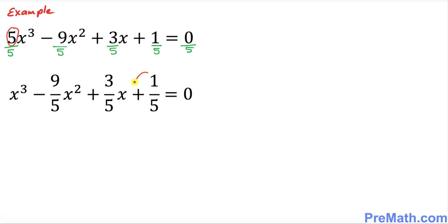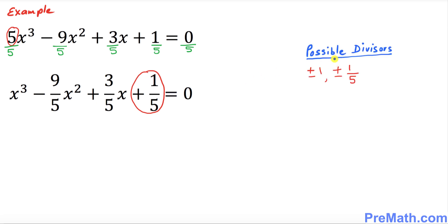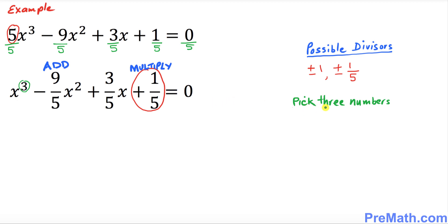Now focus on the very last number, which is 1 over 5. What are the possible divisors or factors of this number? Our possible divisors turn out to be positive and negative 1, and positive and negative 1 over 5. The highest degree of this cubic polynomial is 3, meaning we must have at most 3 solutions, so we are looking for 3 numbers — we're going to pick 3 numbers from these possible divisors.